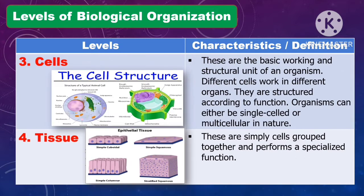Another level of biological organization is the cell. The cell is the basic working and structural unit of an organism. Different cells work in different organs and are structured according to function. An organism can either be single-celled or multicellular in nature.